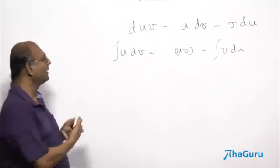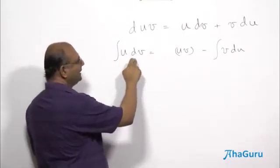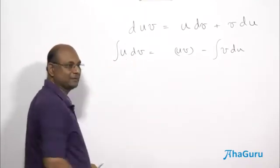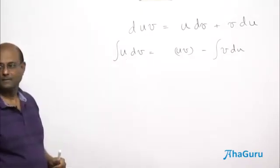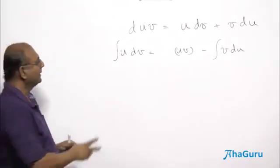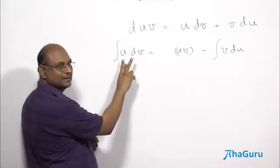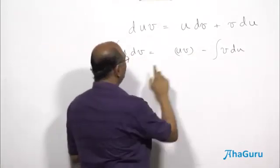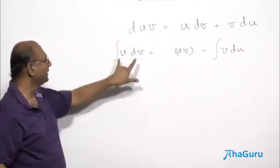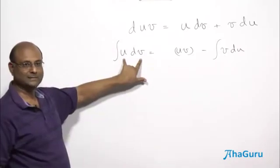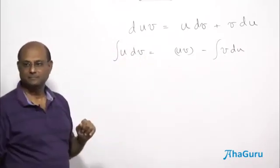So how do we remember it? Integral UDV, now U is a function, V is a function, right? Is UV and then flip minus VDU. So integral UDV is product of these two minus just a flip, right?